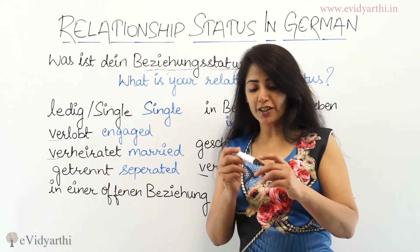If divorced then Geschieden. If widowed then Verwitwet — again 'Be' is pronounced as 'Ver', so Verwitwet.